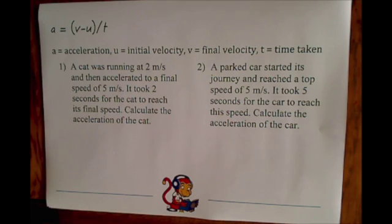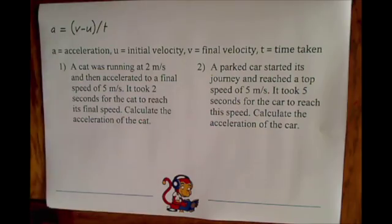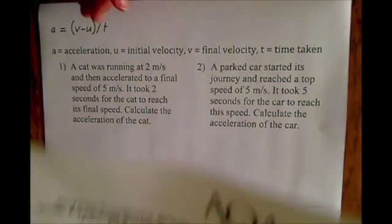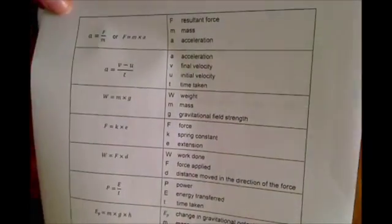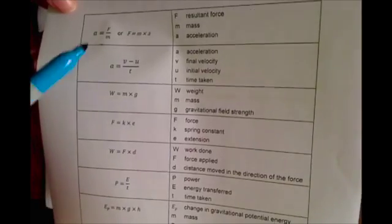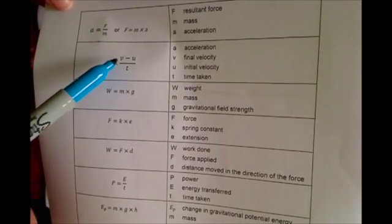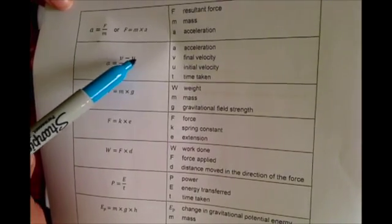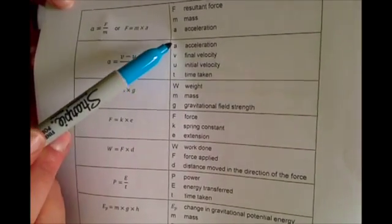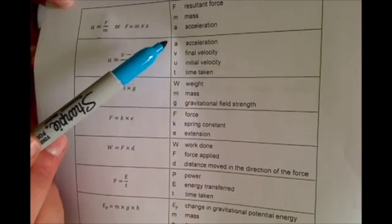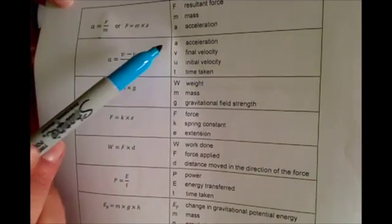Hello and welcome to this video on using the equation a equals v minus u divided by t. This is one of the equations that you'll get on your P2 equation sheet, and it will look something like this. It's the second one down where you've got a equals v minus u divided by t, and it tells you what these letters stand for.